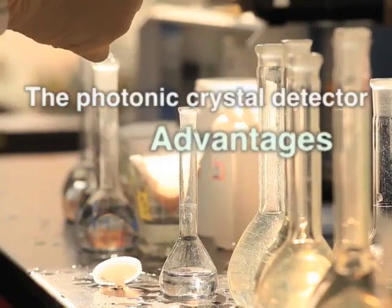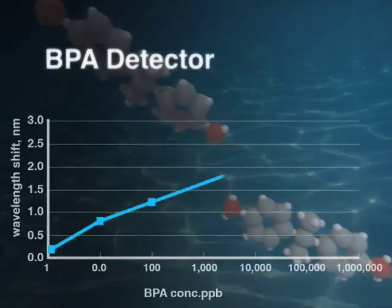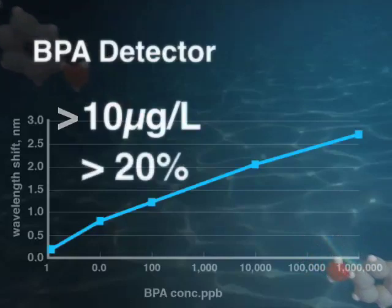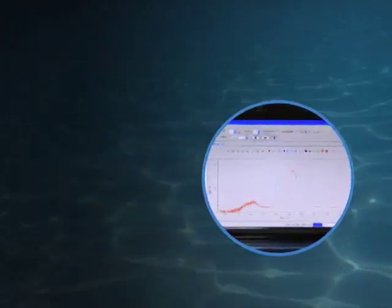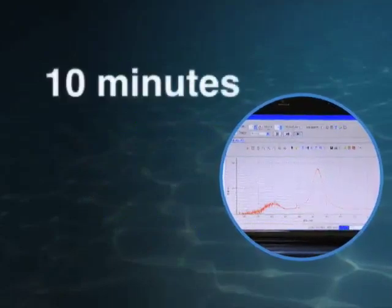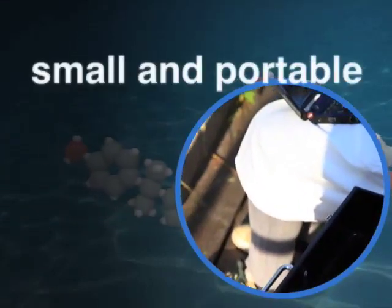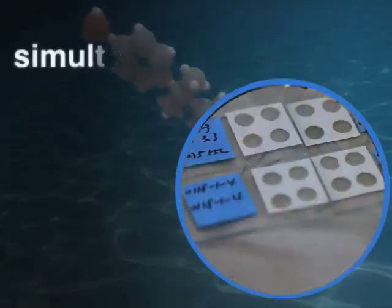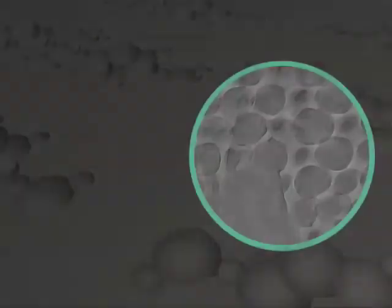It has the following advantages: one, detects concentrations of bisphenol A as low as 10 micrograms per liter with a standard deviation lower than 20 percent. Two, bisphenol A in a solution sample can be detected in less than 10 minutes and the photonic crystal detector can be reused up to five times. Three, the photonic crystal detector apparatus is small and portable. Four, integrated chips can be developed to simultaneously detect a variety of environmental pollutants.